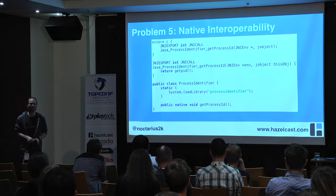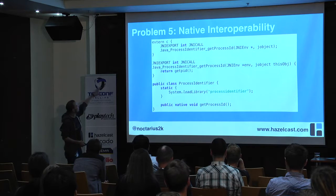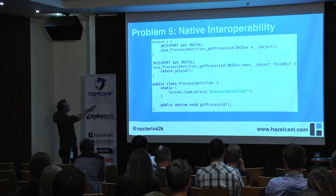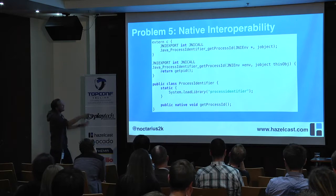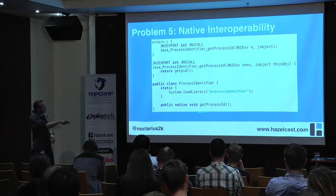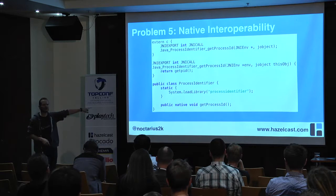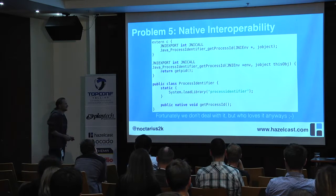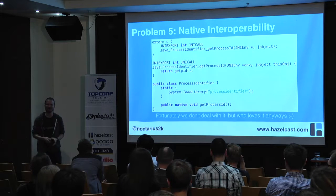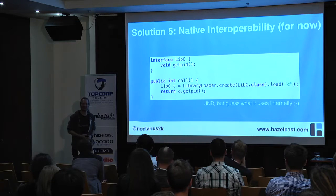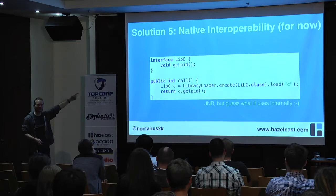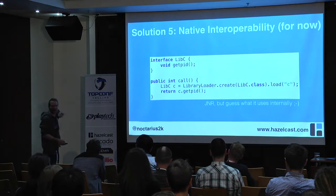JNI — who knows it, who hates it? The idea is clear: we have some C/C++ code, we ensure it follows the C calling convention, there's a naming convention — Java, class name, method name, some weird stuff — and that's how you interact from Java with C/C++. Not very nice: you have to load the library and make these weird native calls. There is one solution called JNR — Java Native Runtime — created by Charles Nutter for JRuby.